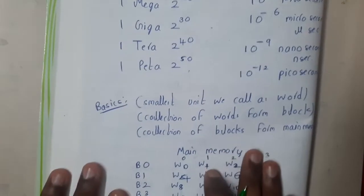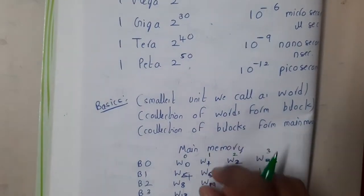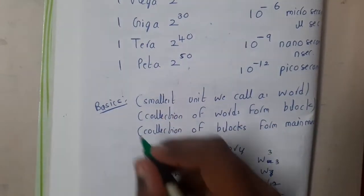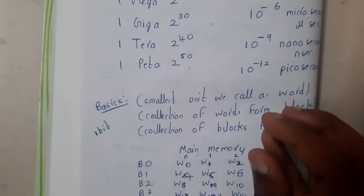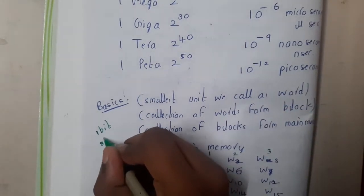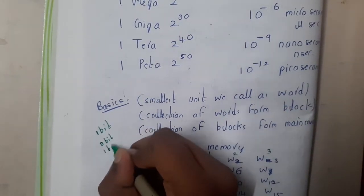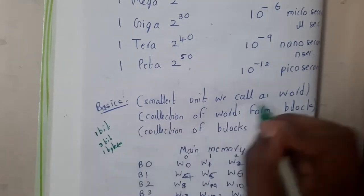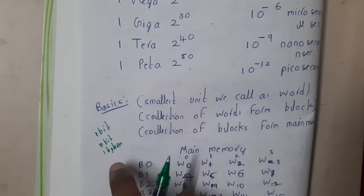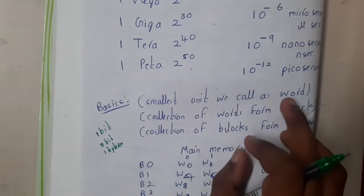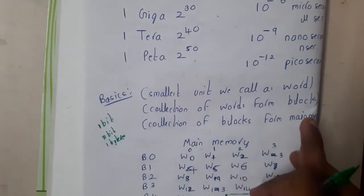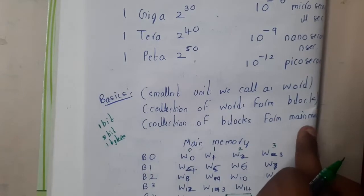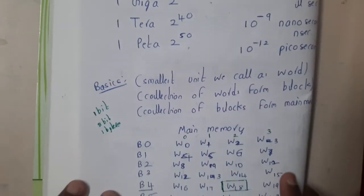So the first basic thing to understand: assume that in your system the smallest unit is one bit. A collection of eight bits combined is called one byte, also referred to as one word. A collection of words is called a block, and a collection of blocks is called main memory.